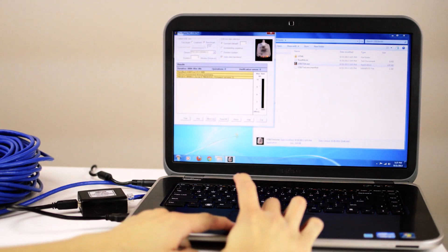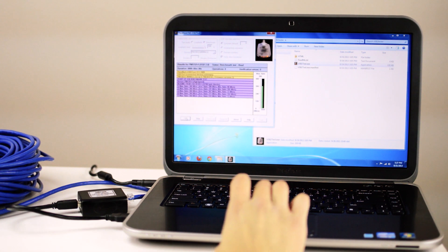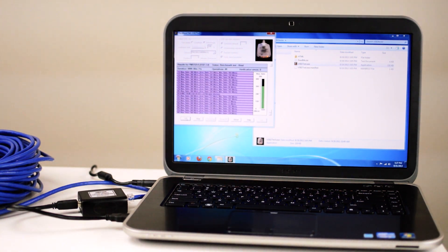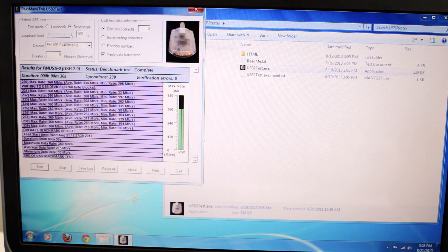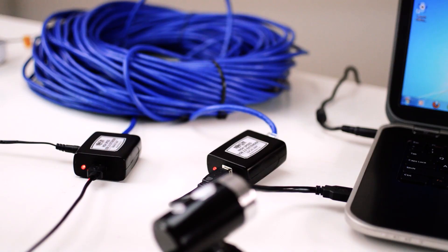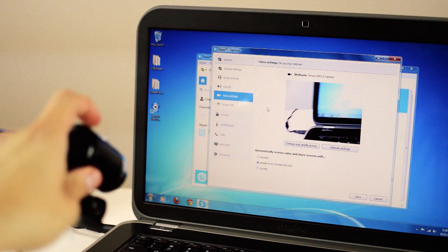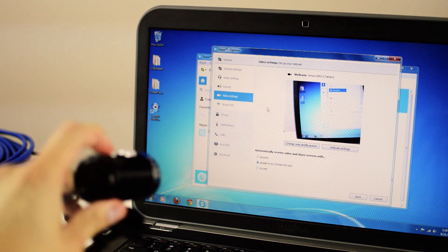And now we switch to our Passmark tester. And we get a max rate 360 megabits per second read and 360 megabits per second write, with an average data rate of 283 megabits per second. Now we plug in our webcam and see that it does work over 200 feet, but it's a bit laggy.